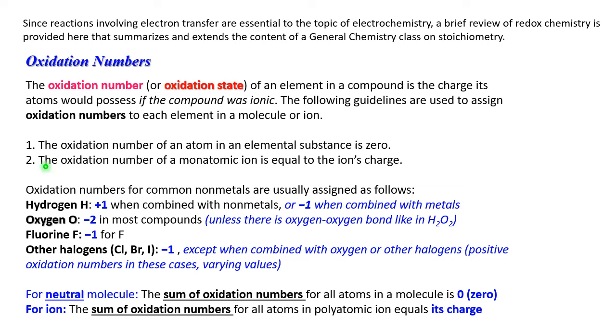First, oxidation number of an atom in an element is zero, so N₂, Cl₂, O₃ all have oxidation numbers zero. Oxidation number of monoatomic ion is equal to charge of ion. Charge of calcium ion, calcium 2+, the oxidation number is 2+. Sodium Na+, the oxidation number is +1. Chloride is Cl-, oxidation number is -1.